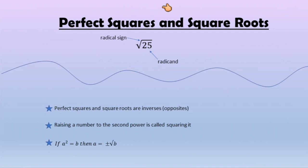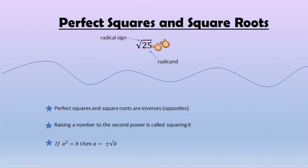Perfect squares and square roots are two topics that go with quadratic equations. When you're looking at a square root, you have a couple different vocabulary words to understand. You have your radical sign, and then the number that is under the radical is going to be called your radicand — that's the number that we are taking the square root of. It's important to understand that perfect squares and square roots are inverses of each other, meaning they are opposites. So if you ever hear the word inverse, just remember that means opposite.